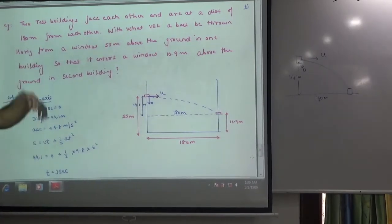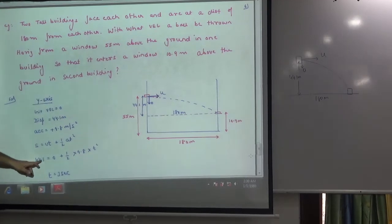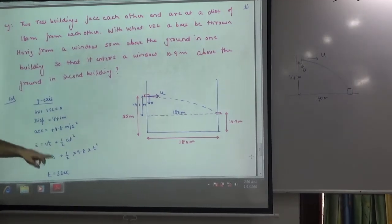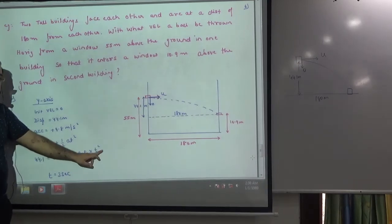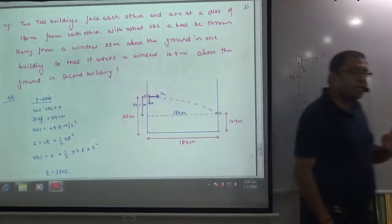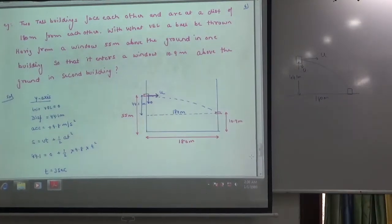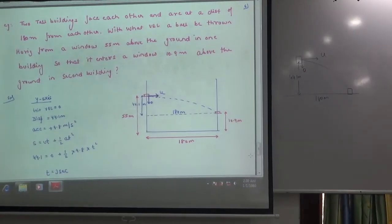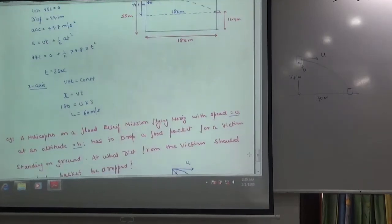s in y-axis is 44.1, initial velocity is 0, so 1/2 × 9.8 × t². Time comes out to be 3 seconds. So in 3 seconds this ball falls down.